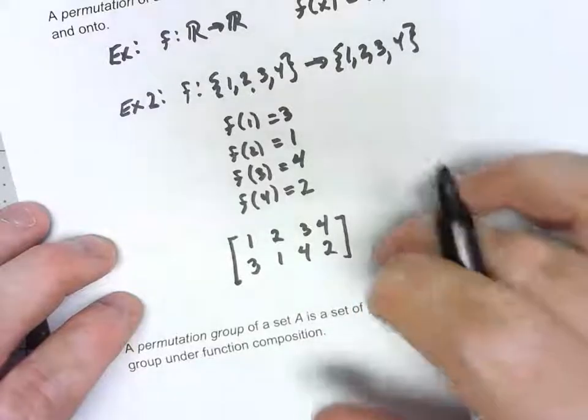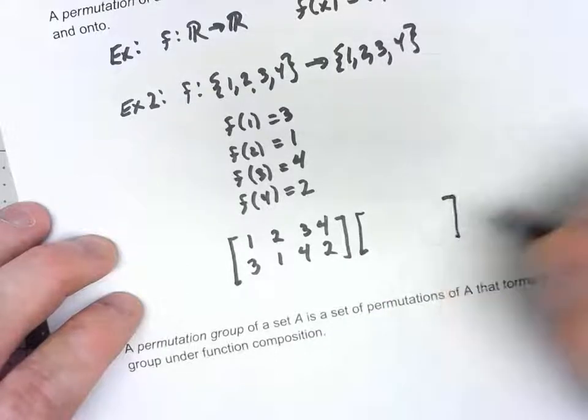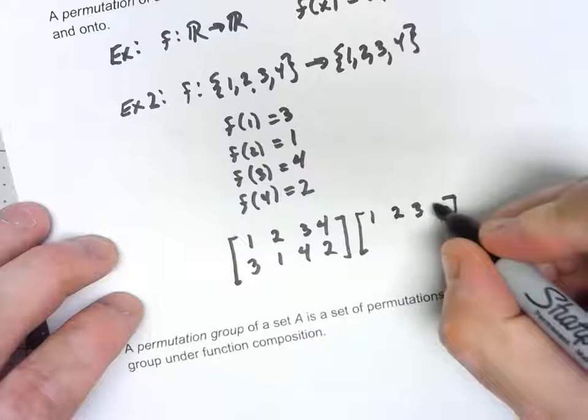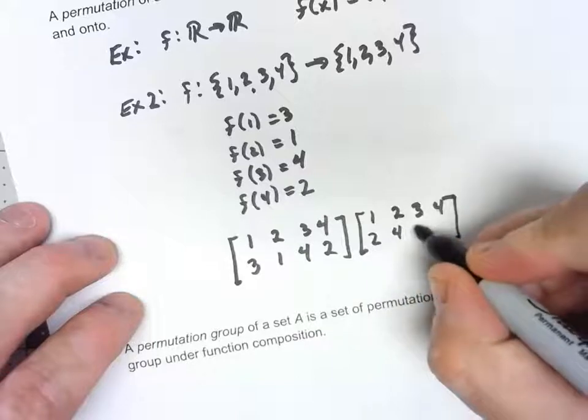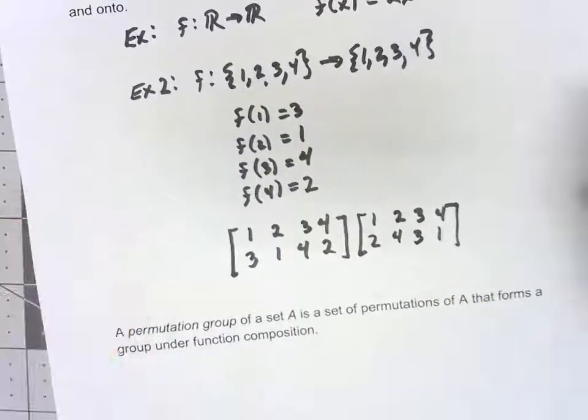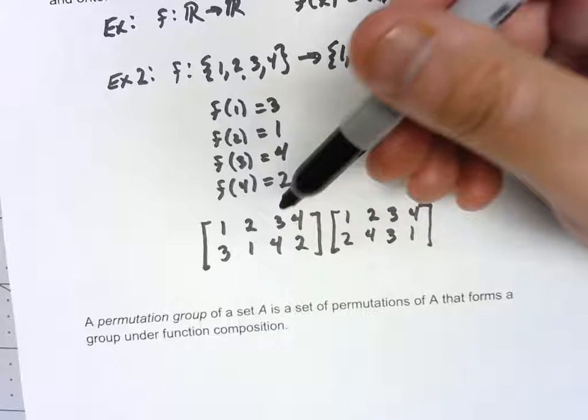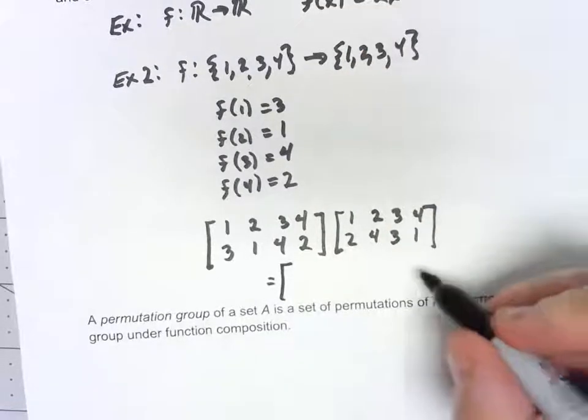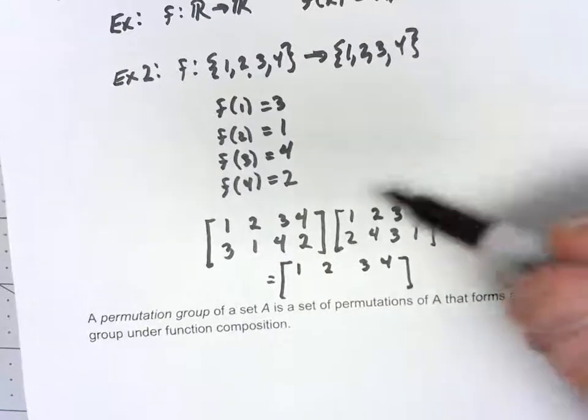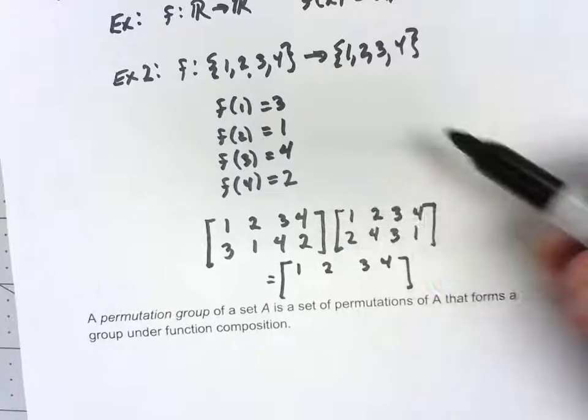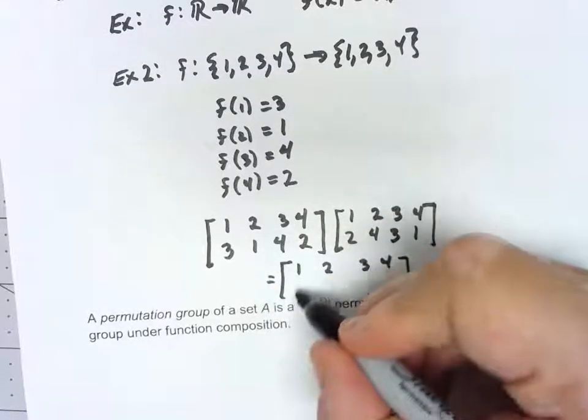Now, to take this a step further, what happens if I'm multiplying two permutations together? Let's say I had 2, 4, 3, 1. Well because these are functions, we do tend to evaluate them right to left. And all we have to do is, we know it's going to be 1, 2, 3, 4 across the top, we have to kind of figure out what does 1 map to eventually. 1 maps to 2, but then 2 maps to 1, so in the end 1 has come back to 1.